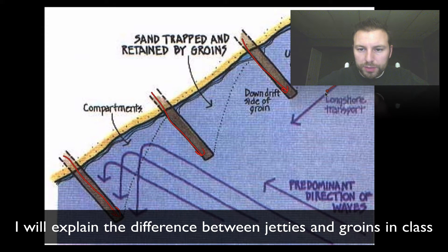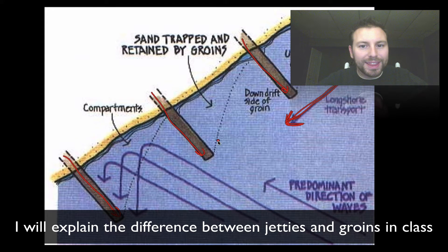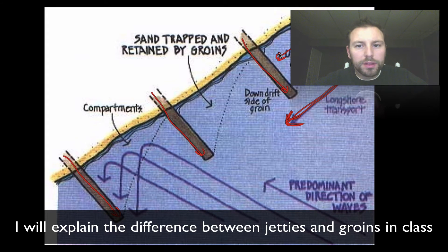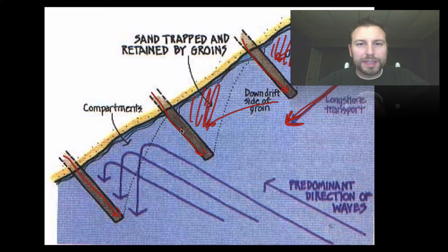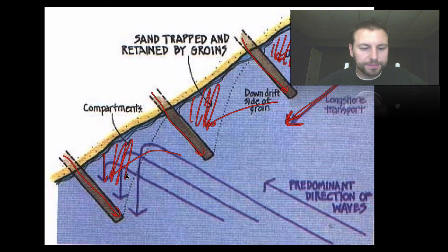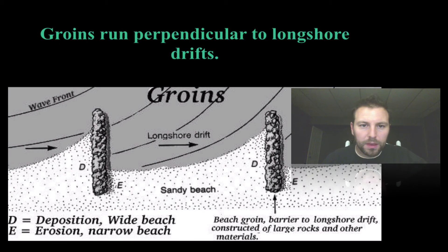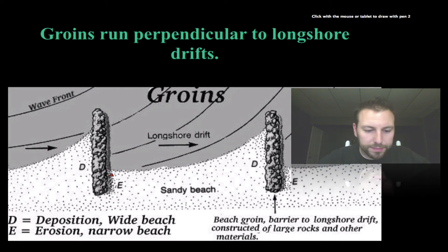We have the longshore transport — this is a current that's close to the shore, so it's going to move sediment down the beach. What happens is the sediment comes in, hits the feature, and stops. We get a buildup on that side, and then some of it is pulled out and piles up on the other side. So the groins run perpendicular to the longshore drift current in our ocean.